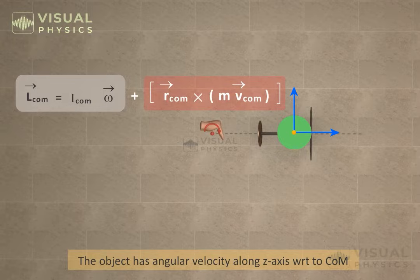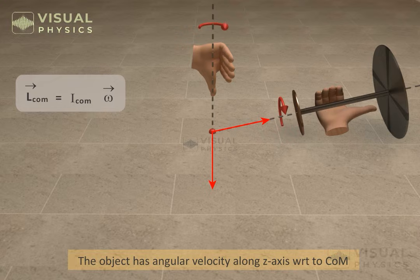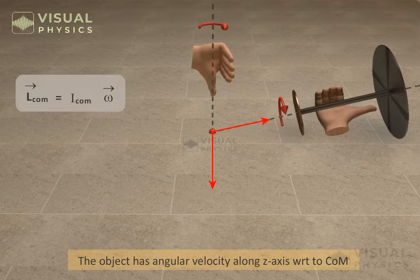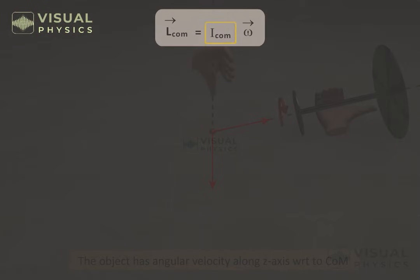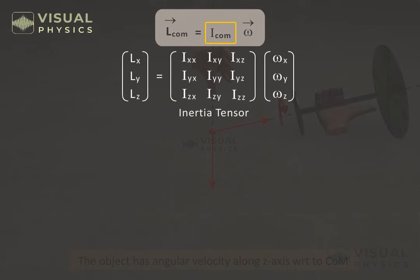So, even without the second term — i.e., for considering only the angular momentum of the system with respect to the center of mass — we need to consider the angular velocity of the system along multiple axes. And in such cases, the moment of inertia in this equation is replaced by the inertia tensor.